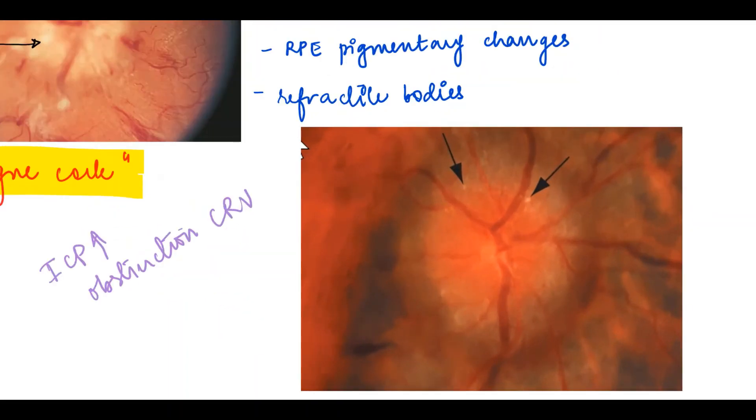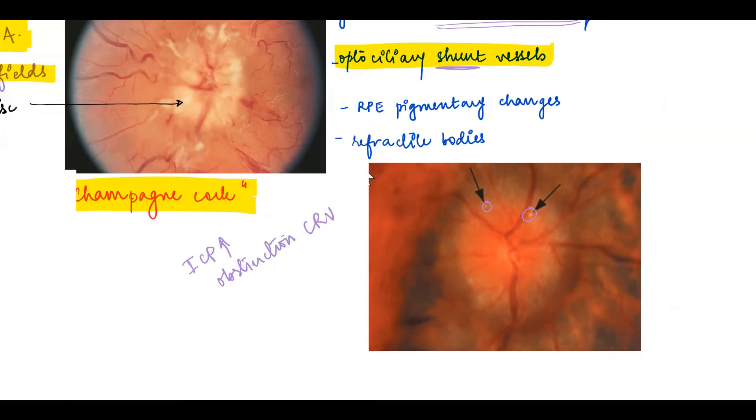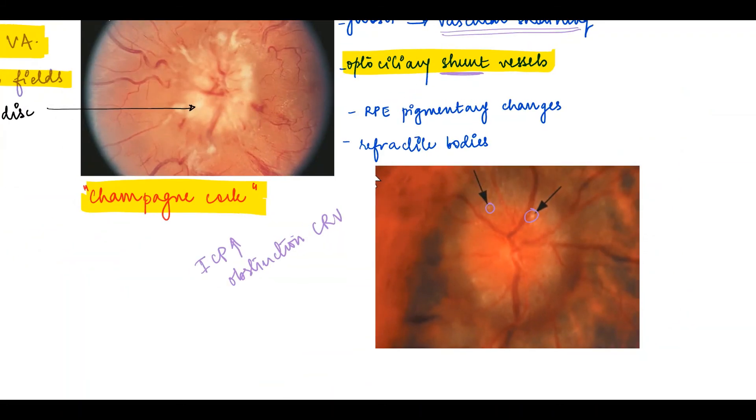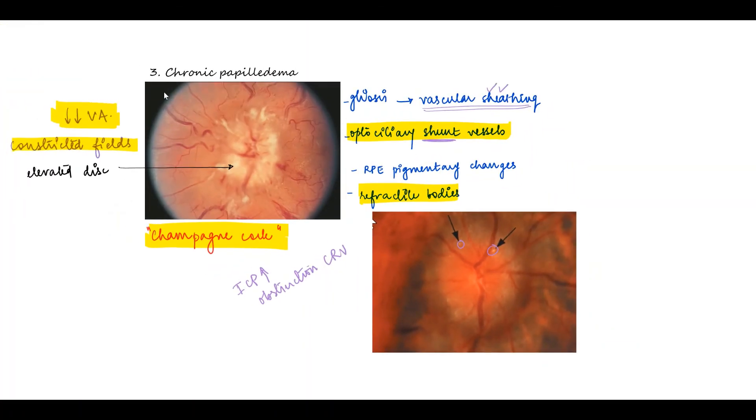In this image we can see these bodies at the disc. This deposition of refractile bodies can be seen that gives it a drusen-like appearance. Also, pigmentary changes might be seen at the disc and the macula. So this is what we characteristically see in chronic papilledema with a drop in the vision and constricted fields.